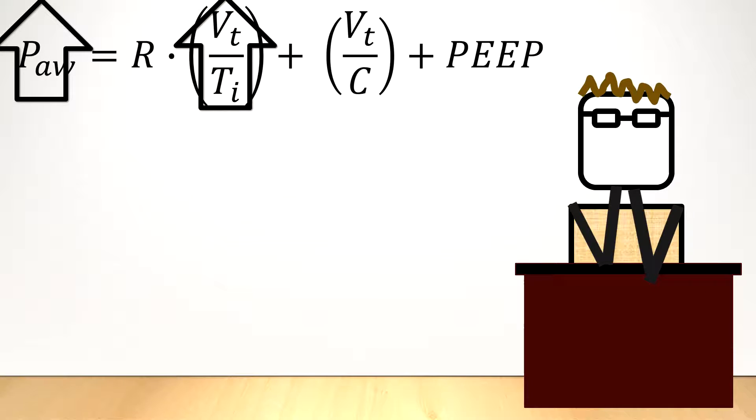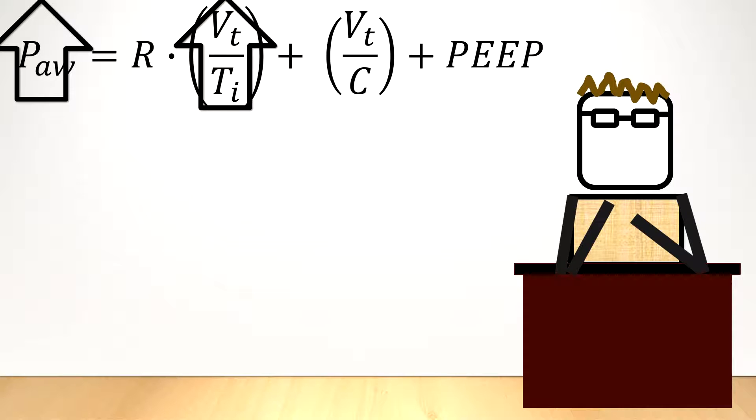On the flip side, if the airway pressure is high, and this is not due to the PEEP or the lung component of the equation of motion, then you can decrease the flow rate by increasing the TI.